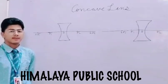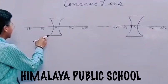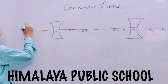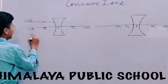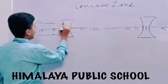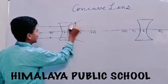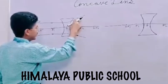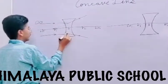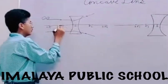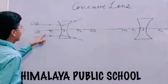Now I will draw the ray diagram of concave lens. There are two conditions for construction of concave lens according to the position of the object. First condition is when the object is placed at infinity. The rays coming from object at infinity are always parallel to the principal axis. After refraction they will diverge from each other. Both rays are diverging and do not actually meet at principal focus. So the image is formed at principal focus. The image formed by a concave lens is always virtual and erect.